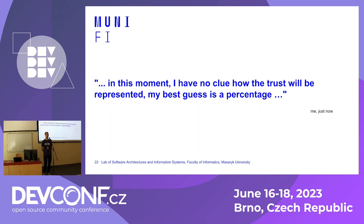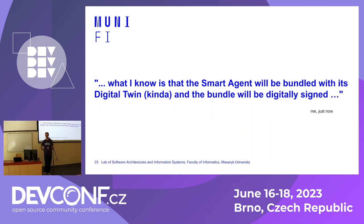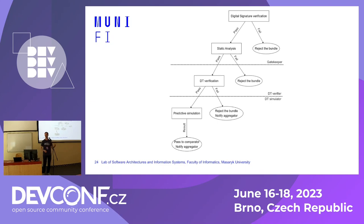I'm not sure exactly how the trust value will be represented. In our papers we talk about a percentage, but more and more research points toward a vector of different aspects — maybe five or six percentages based on different metrics. We would like to go with a smart agent and digital twin bundle with a digital signature for extra safety. Our generic idea: verify the digital signature — if it fails, reject the bundle; if it passes, do static analysis — if that fails, reject; then verify the digital twin on preset simulations — if it fails, reject and propagate the trust score to others; then run predictive simulations, execute, and do live compliance checking.